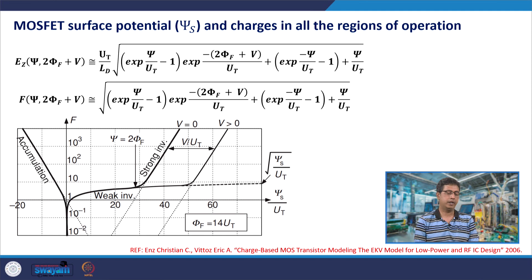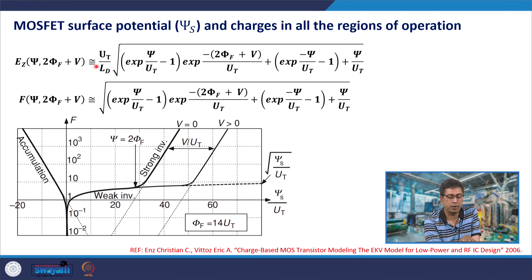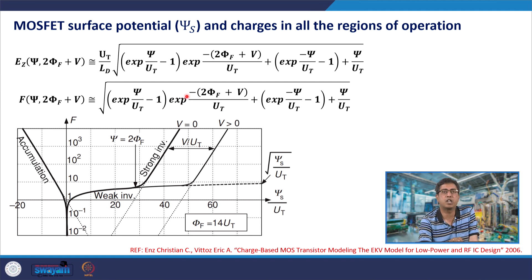In the previous lecture we derived the expression for the electric field at the silicon-silicon dioxide interface and defined the function f. This function f is proportional to the charge in silicon and also proportional to the vertical or transverse electric field at the silicon-silicon dioxide interface in the gate stack.